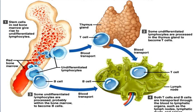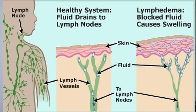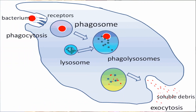After puberty, the thymus shrinks. Only mature lymphocytes can carry out an immune response. During the maturation process, many different types of B and T lymphocytes develop — perhaps many millions.